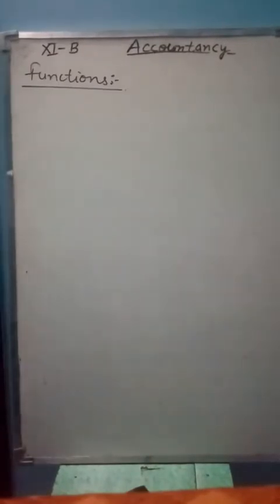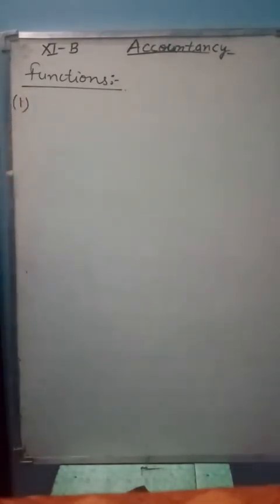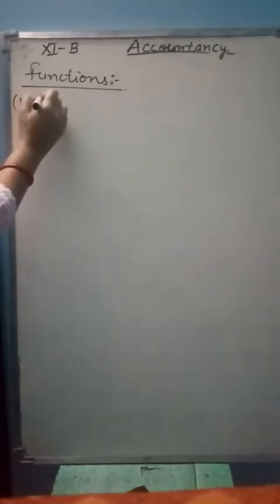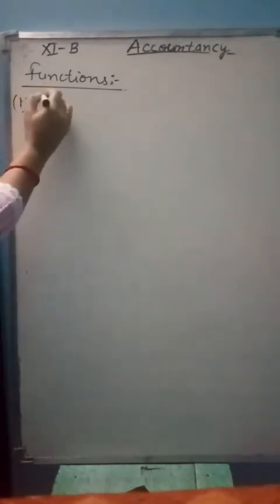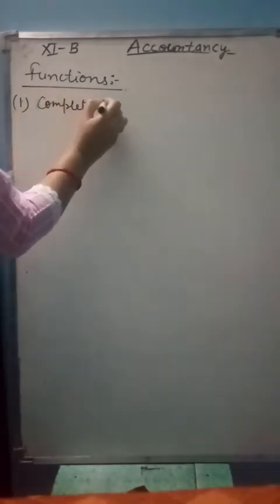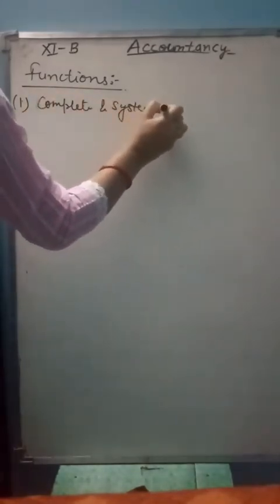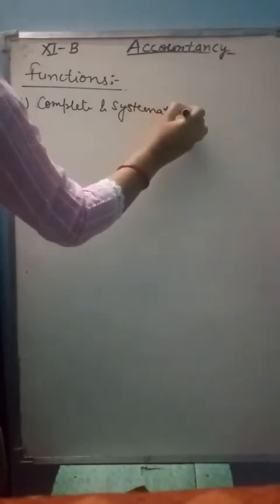The next topic is functions of accounting. Number one: maintaining complete and systematic records. This is similar to what we discussed in objectives — maintaining complete and systematic records.